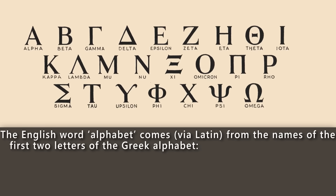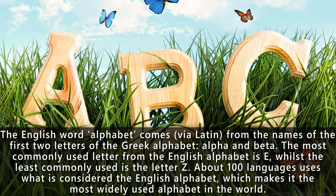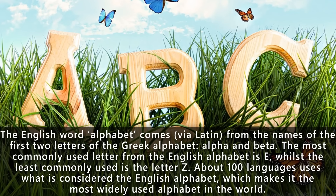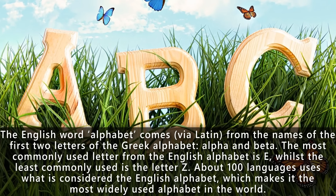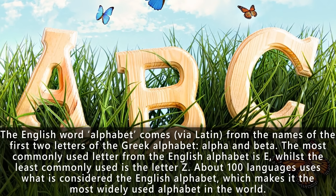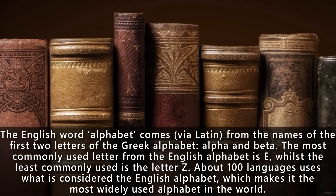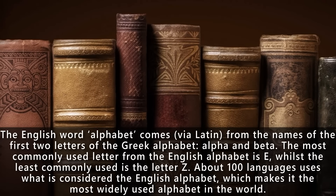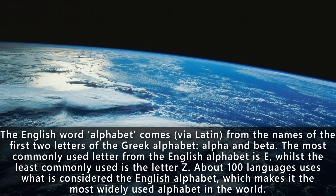Did you know that the English word 'alphabet' comes from the names of the first two letters of the Greek alphabet — alpha and beta? The most commonly used letter in the English alphabet is the letter E, while the least commonly used is the letter Z. About a hundred languages use what is considered the English alphabet, making it the most widely used alphabet in the world.